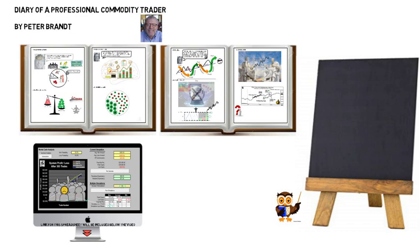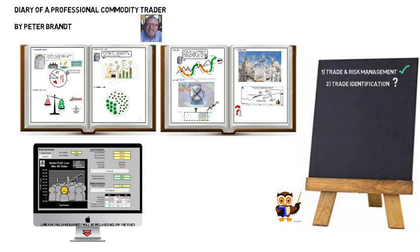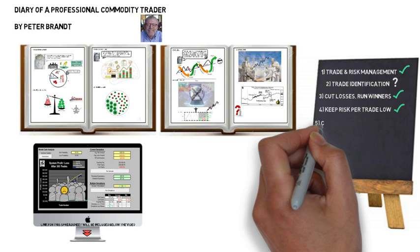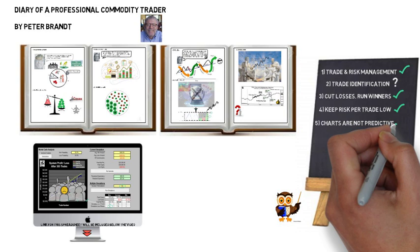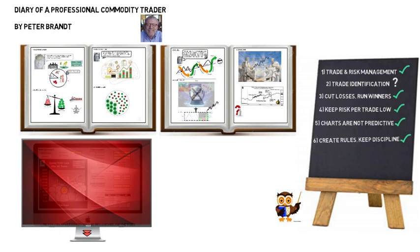So what have we learned? One: trade and risk management are key. Two: trade identification is less important than the majority believe. Three: a high win rate is not necessary if losses are cut and winning trades are left to run. Four: losing runs are inevitable but manageable if your risk exposure is kept low. Five: charts merely present structure and not price predictability. Six: rules take away subjectivity but rely heavily on discipline.